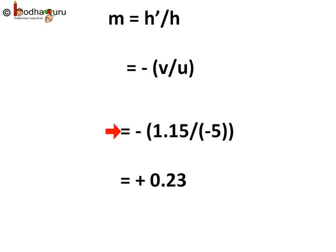Here v is equal to 1.15 we calculated just now and u is equal to minus 5. So M will be equal to minus times (1.15 divided by minus 5). And this will be plus 0.23. Plus sign means it is measured upward from the pole. That is, image formed is an erect virtual image.